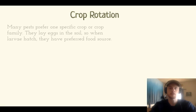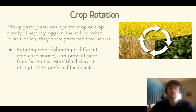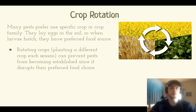Because pests typically have one specific food source that they require, rotating your crops can prevent them from establishing themselves in the soil and continually feeding on that same crop. They lay their eggs in the soil, the larvae hatch and need their preferred food source, so moving that crop each year to a different species will prevent them from establishing in your soil. Using a three-year cycle and planting a different crop every year prevents those larvae from having the food source they need.